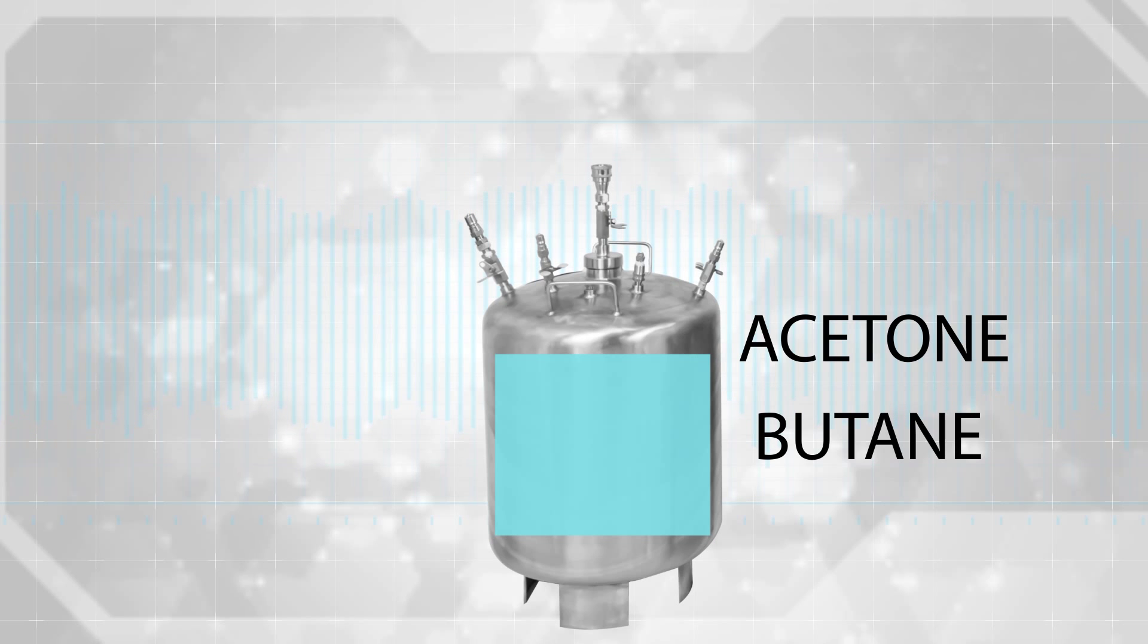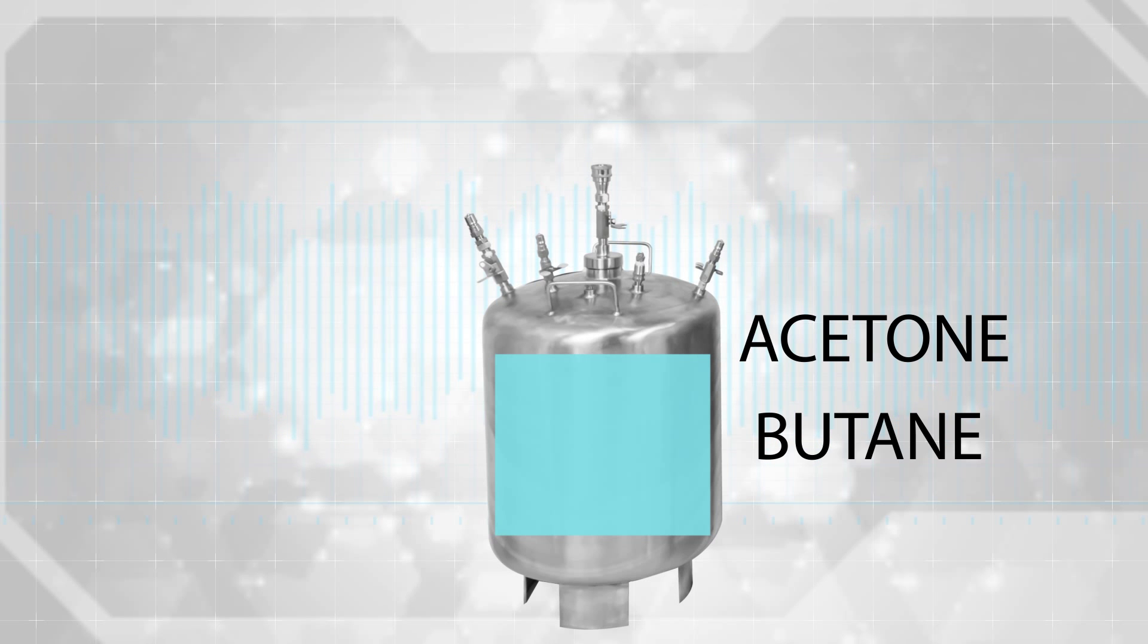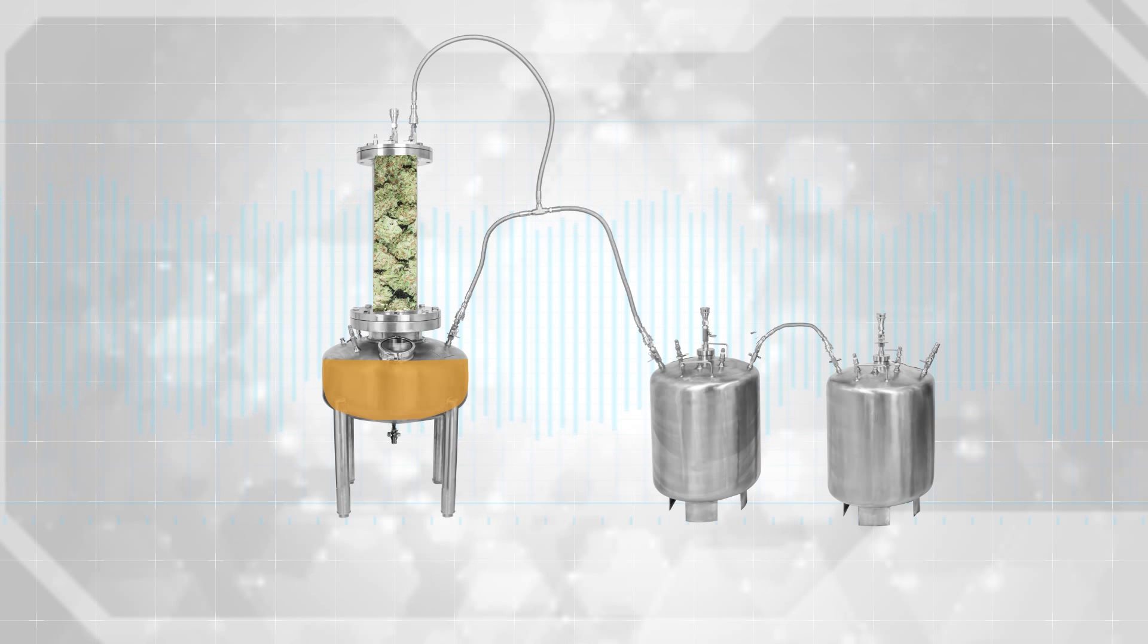Primary solvent choices are not limited to butane but butane is the lowest boiling point solvent you can choose that allows pump-free safe sanitary recovery using distillation. Any solvent with a higher boiling point than butane can be used and recovered with the same distillation process.